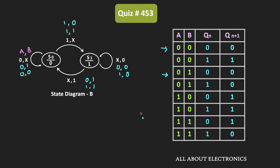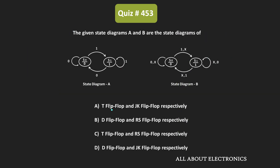So we can say that the given flip-flop is the JK flip-flop. Moreover, when both inputs are zero, the flip-flop will remain in the same state. When the first input is zero and the second is one, then irrespective of the present state, the output will become zero. And when the first input is one and the second input is zero, the output will become one. So we can confirm that the given state diagram satisfies the JK flip-flop conditions. Therefore, the first state diagram is of D flip-flop, the second is of JK flip-flop, and the correct answer is D.